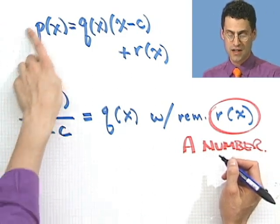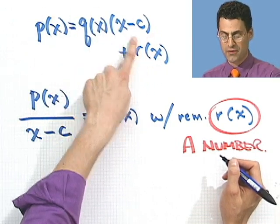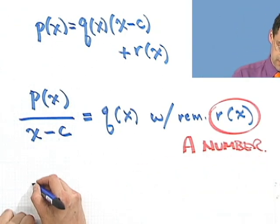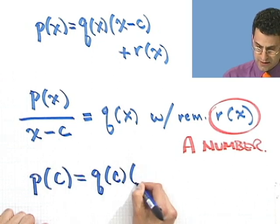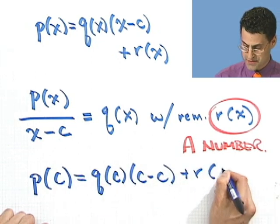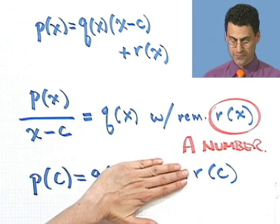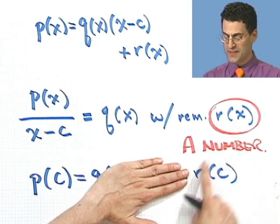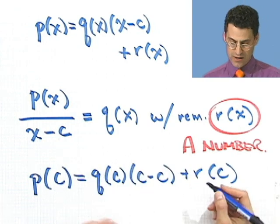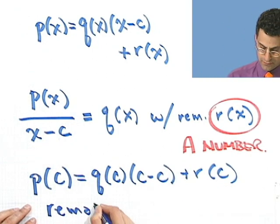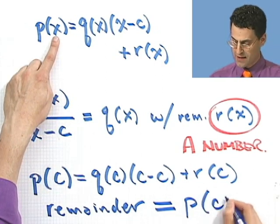Let's see if we can figure out what the number is. If we go back here and just plug in the value c for x everywhere, what I would see is p of c equals q of c times c minus c plus r of c. But c minus c is 0, so in fact this whole term is 0. And so I see that r, that thing that I know is a number, must equal p of c.